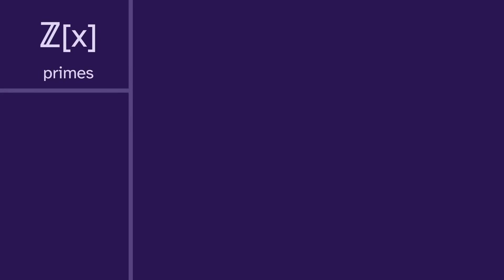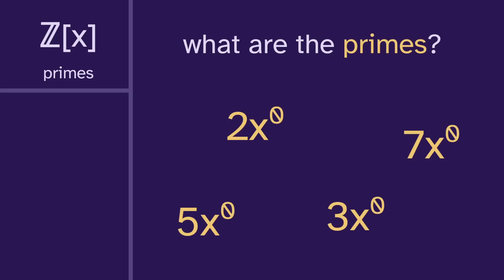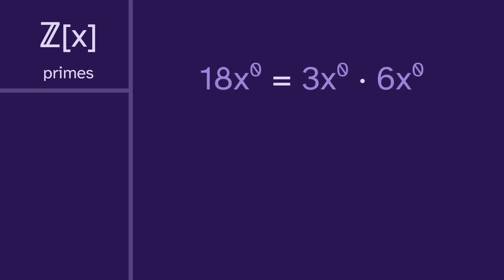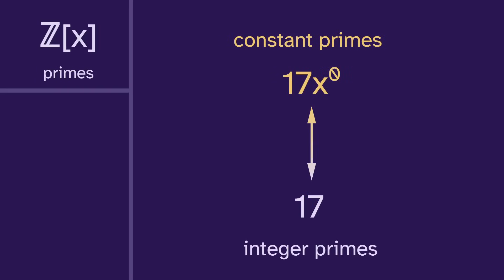So let's start with the integer polynomial primes. What are the primes? Well, we have two, three, five, seven, and so on. It's just the regular primes that we're familiar with. These are polynomials — we call them constants. Technically we would write them as x to the zero, but we usually just leave that out. Any factorization in the constants just corresponds to a factorization in the integers, so any constant prime corresponds to an integer prime. That gives us our first set of primes: the integer primes.